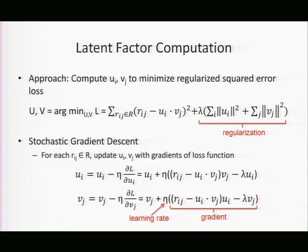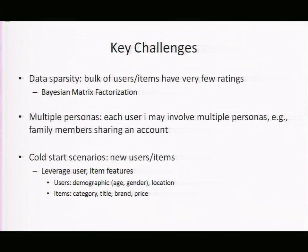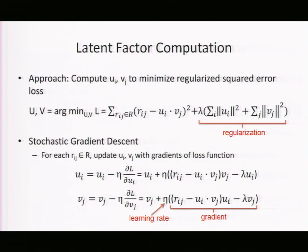SGD can scale to large datasets because it examines one training example at a time. One important thing to note: this loss function is not convex because of the product term Ui·Vj, so it may have multiple local minima and gradient descent may not always converge to the global minimum.